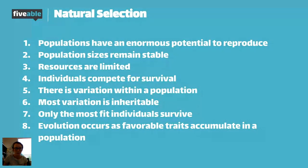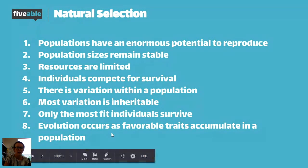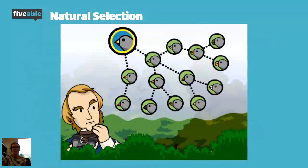Lastly, evolution occurs as favorable traits accumulate in a population. Some favorable traits may come and go, but it's when we see traits that allow an organism to survive and reproduce that we see the transformative change we consider evolution or natural selection. Going back to Darwin's finches — these beaks are allowing the finches to do the two most important things in life: survive and reproduce. They survive because they're better fit to a food source on their island, and because they survive, they're more fit to reproduce.